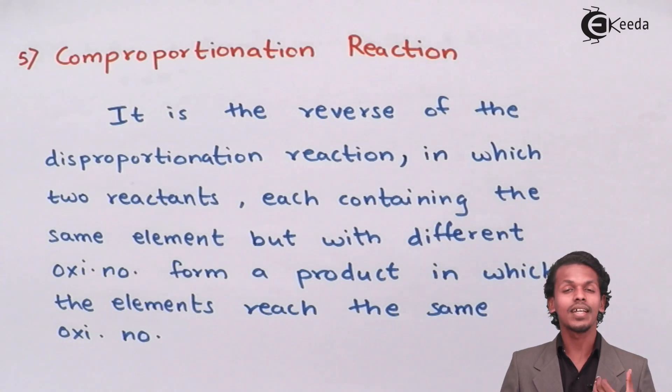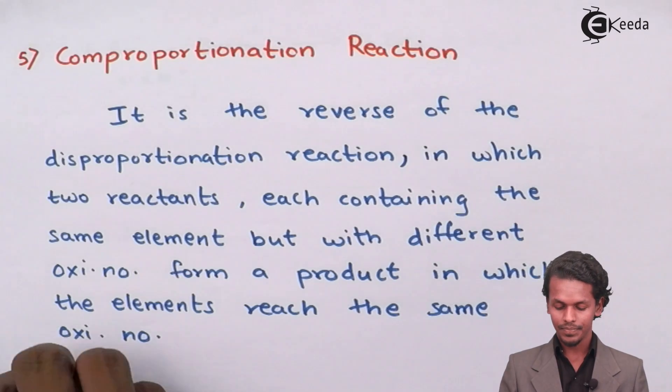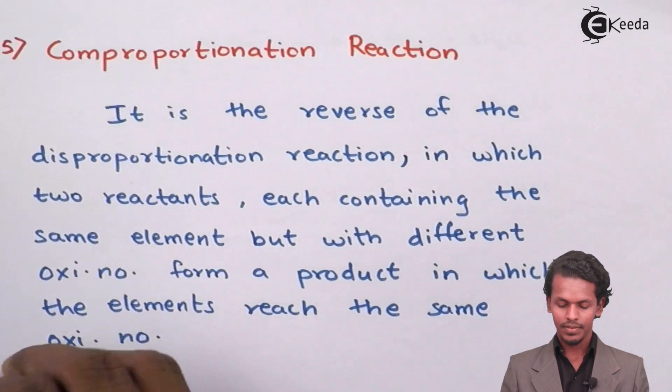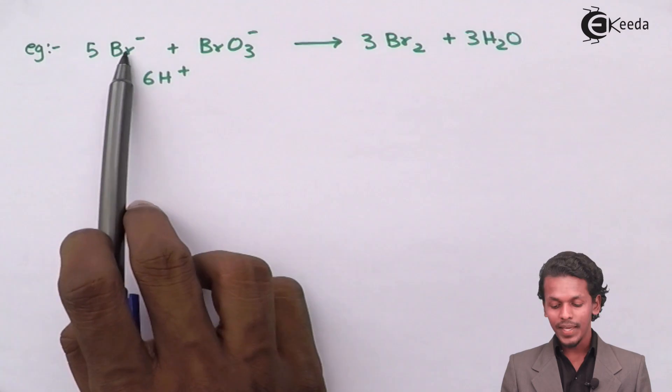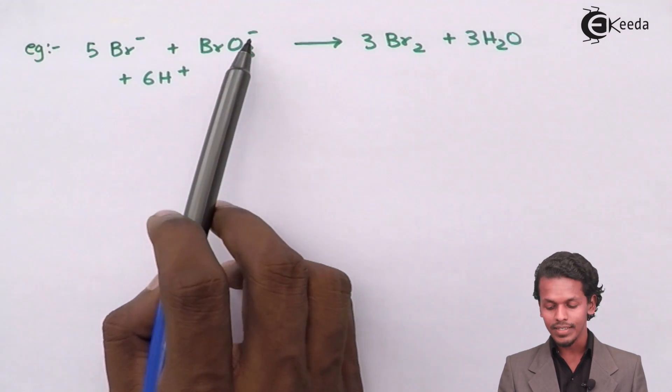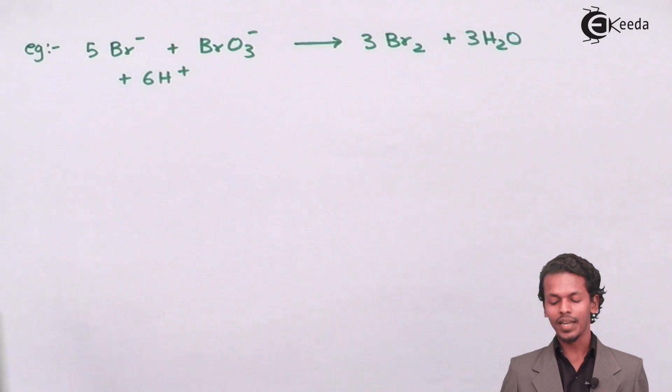But this is the inverse of it. Let us know more about it by taking an example. In this case, I have mentioned an example in which Br⁻ combines with BrO₃⁻ and gives us 3Br₂ plus 3H₂O.